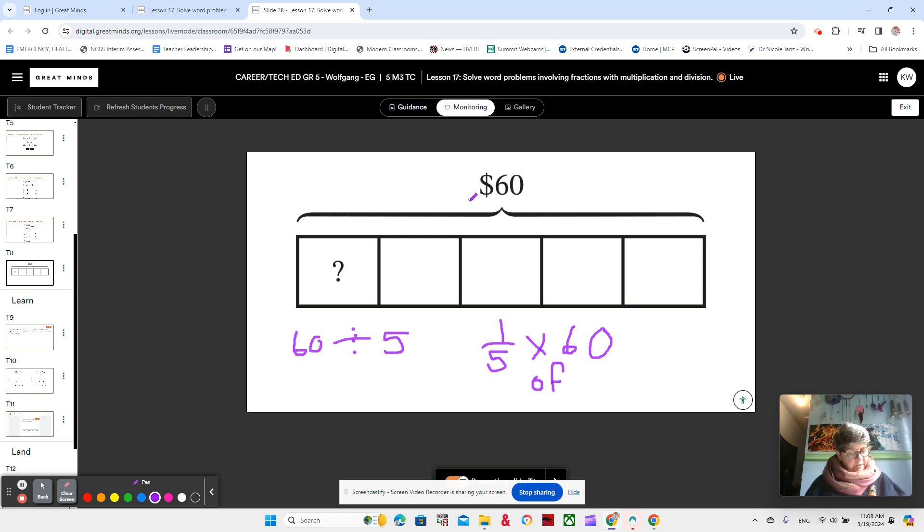We notice that we have dollars here. So let's think about a real life scenario that matches this tape diagram. Maybe I went to the store and I had $60, and I spent 1 fifth on chocolate. How much money did I spend on just chocolate? Or, if we're thinking about 60 divided by 5, maybe I bought 5 copies of the same book for our classroom library, and it cost a total of $60. How much did each book cost? 60 divided by 5.